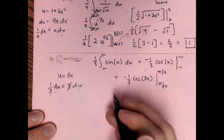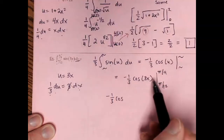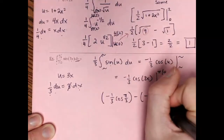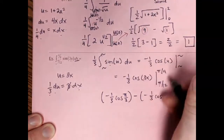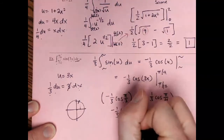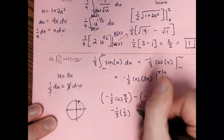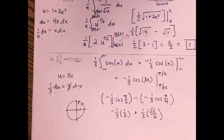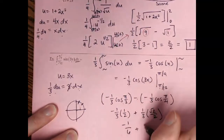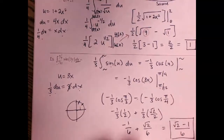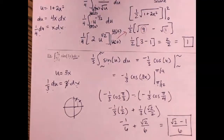Plugging in the x values with the coefficient −(1/3): upper limit gives 3·(π/9) = π/3, lower limit gives 3·(π/12) = π/4. So we have −(1/3)[cos(π/3) − cos(π/4)]. Cosine of π/3 = 1/2 and cosine of π/4 = √2/2. This gives −(1/3)[(1/2) − (√2/2)] = −1/6 + √2/6, which simplifies to (√2 − 1)/6.